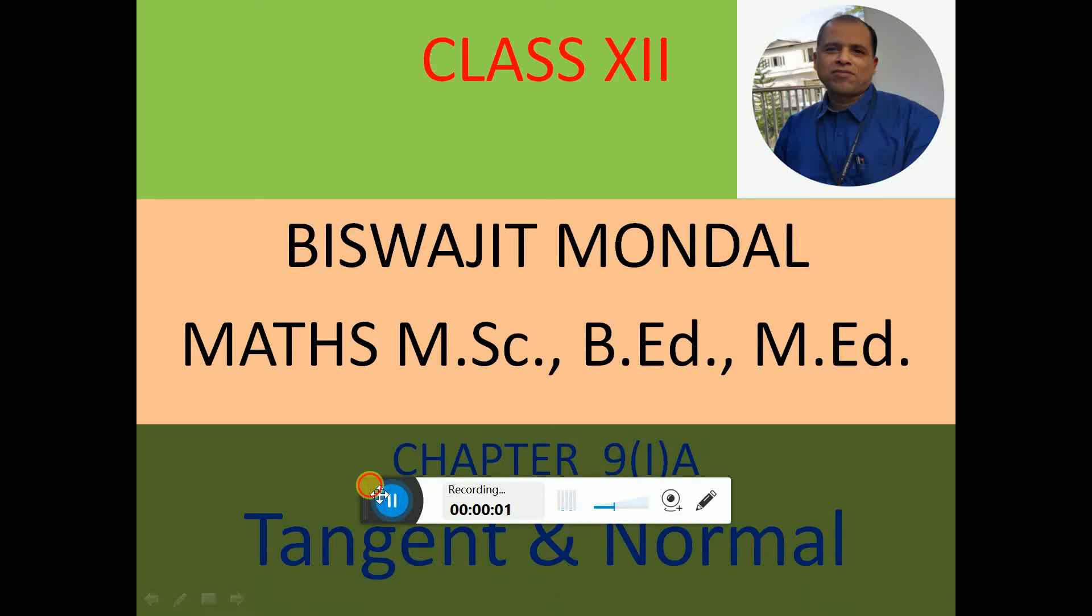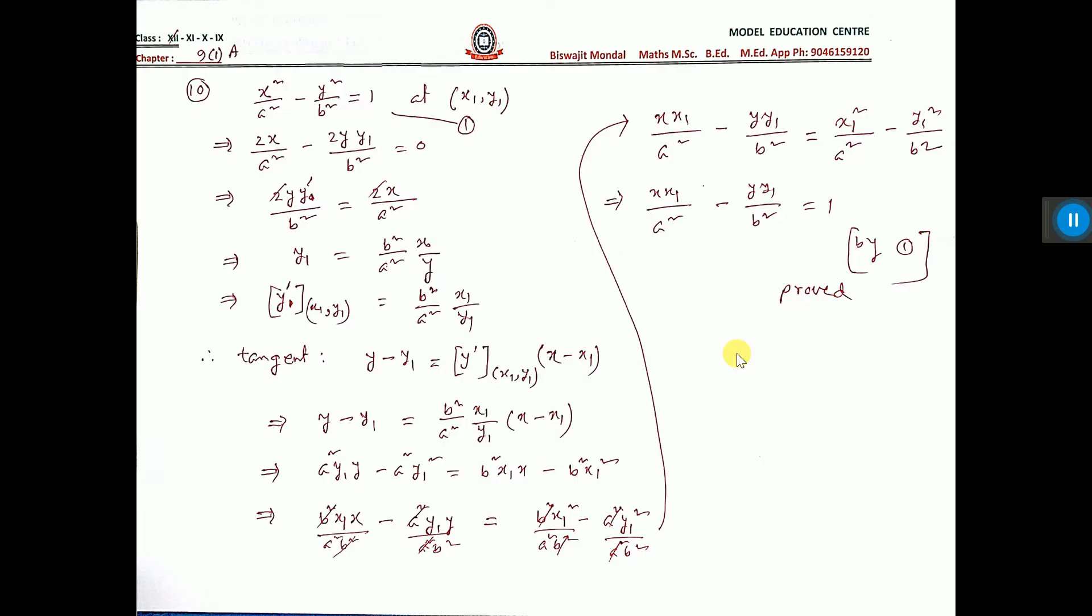Now see, I am doing sum number 10. The sum is given, so that the equation of the tangent to the parabola x square by a square minus y square by b square is equal to 1 at x1 y1 is this. We have to show. So, let us show.